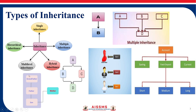The last type is hybrid inheritance. We can see from grandfather to father to son — that is multi-level. And we have father and mother, from whom a child or son is derived — that is multiple inheritance. So hybrid is a combination of multiple and multi-level inheritance.